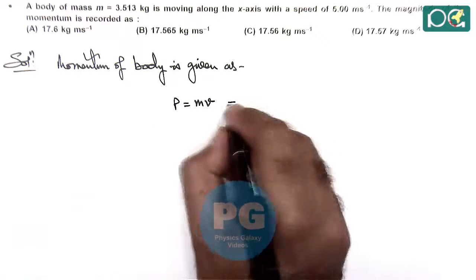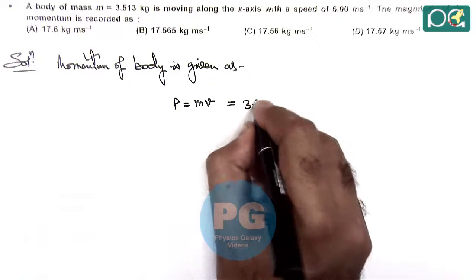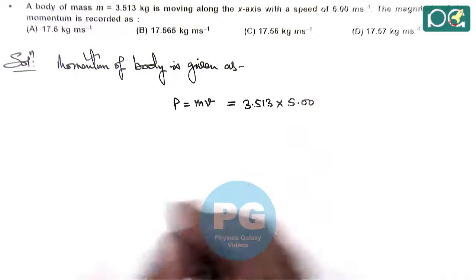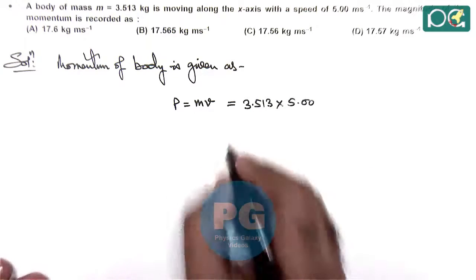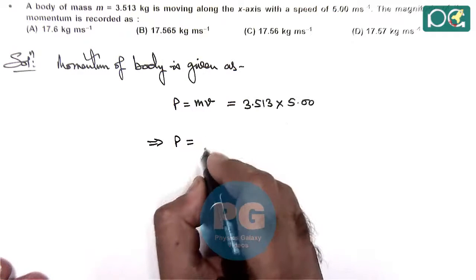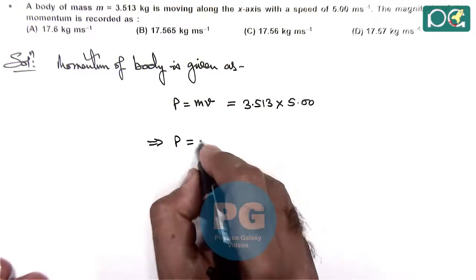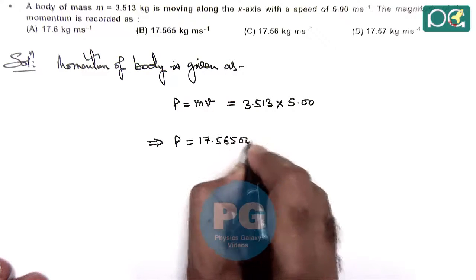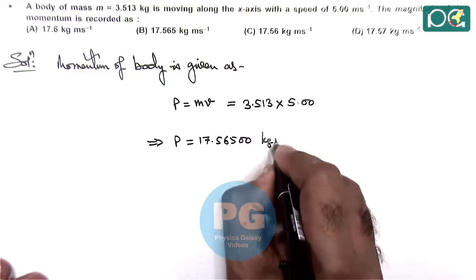So if we substitute the numerical values, it is 3.513 kg multiplied by 5.00 meters per second. And if we multiply the values, then momentum is calculated as, on multiplying this gives 17.56500 kg meter per second.